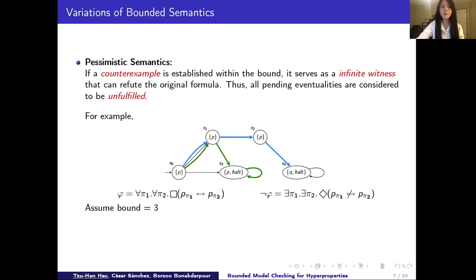So since a counter example is found within bound, we use pessimistic semantics to conclude the result. That is, the formula satisfies NOT phi within three steps. So it satisfies NOT phi infinitely as well. Thus, we say the model does not satisfy the original phi in the infinite semantics.